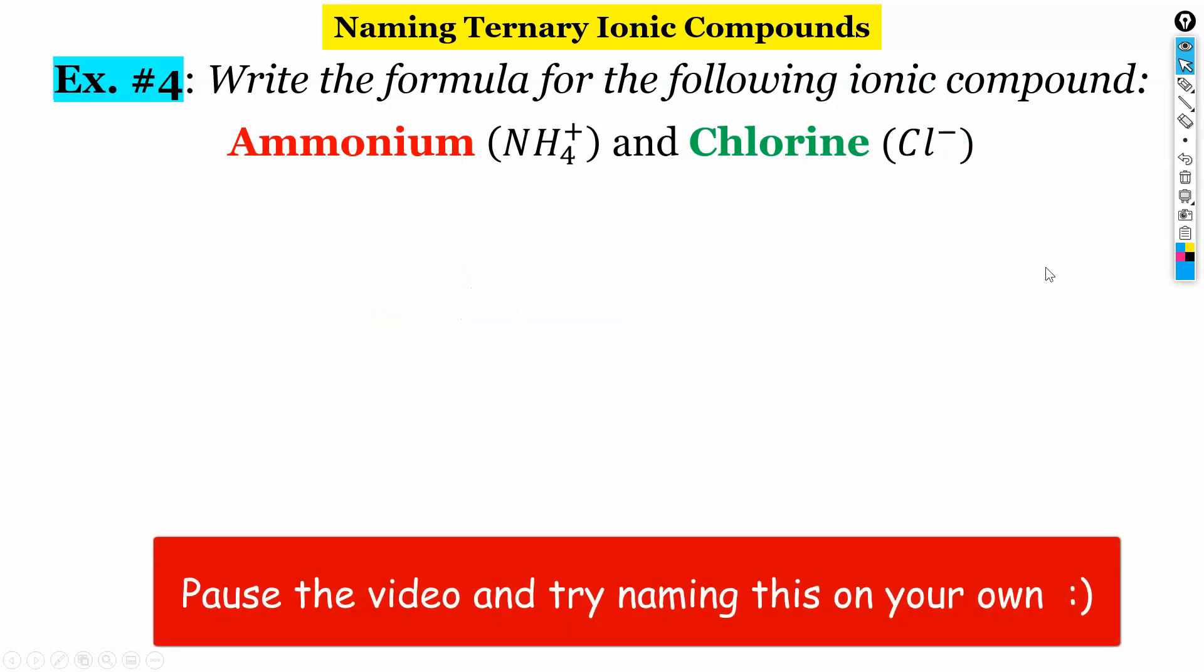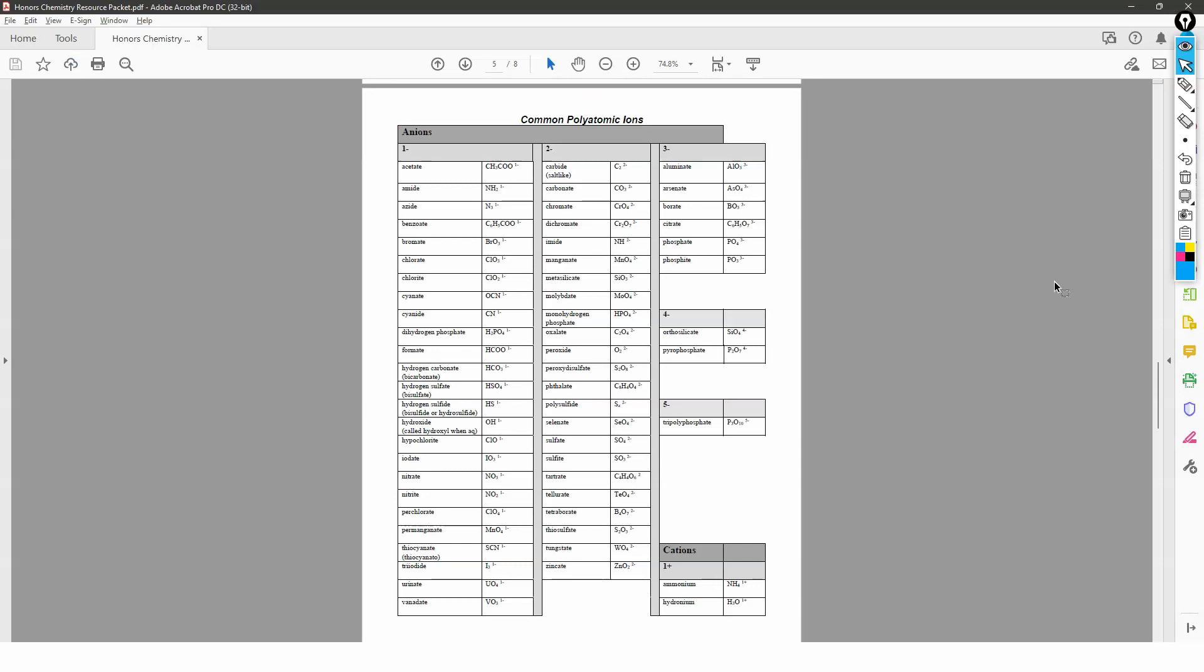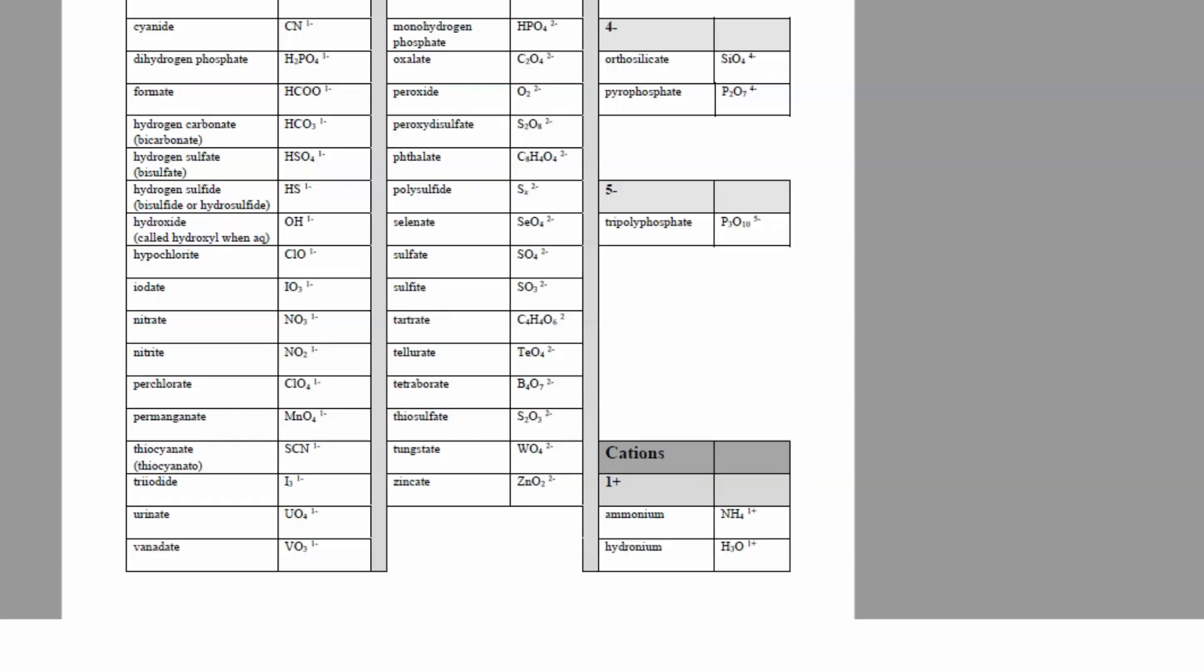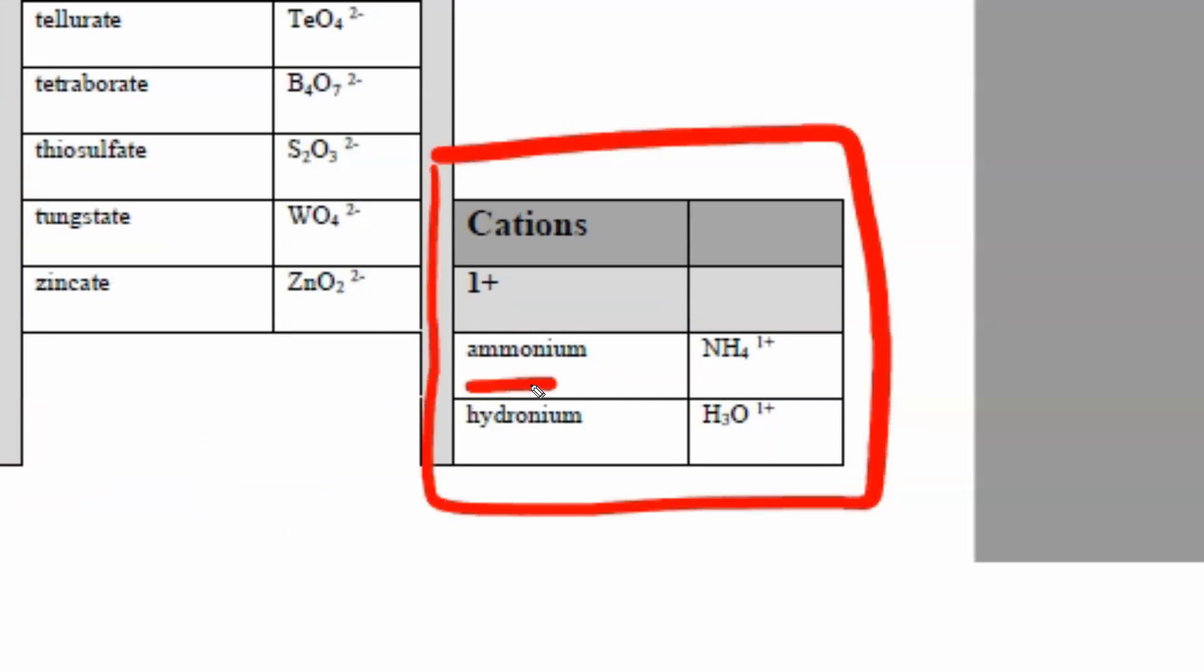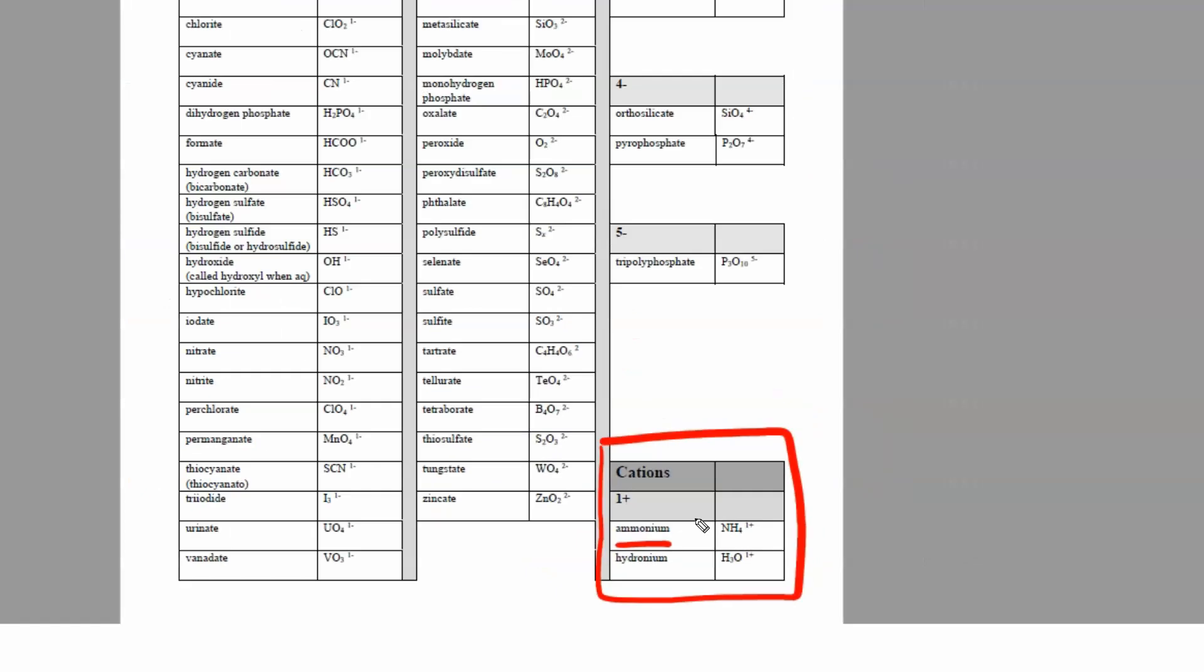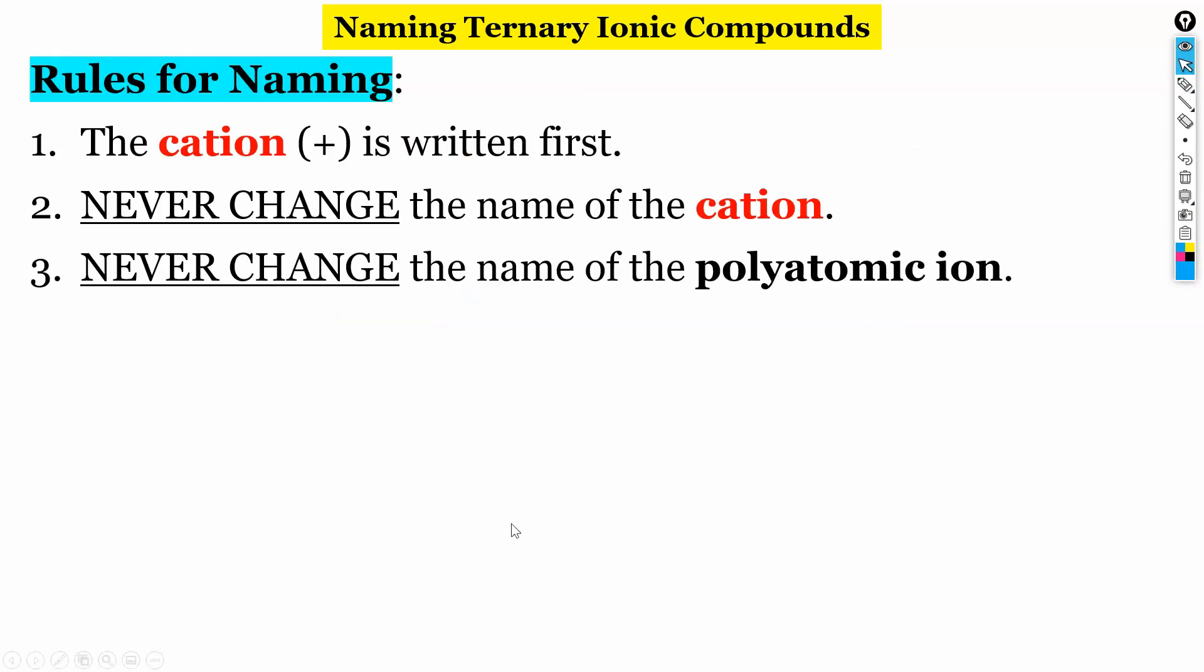So again, go ahead and pause the video. Work this one out on your own. And then come on back. Okay. So hopefully by now you've had a chance to work this one out. Okay. Ammonium is one of the few polyatomic cations. So if you look down in the lower right-hand corner, these are cations. And then here is ammonium. So there's only two. We have ammonium and hydronium. So ammonium NH4 has a charge of plus one. And then chlorine has a charge of minus one. So you should have just put these two together like that. Okay.